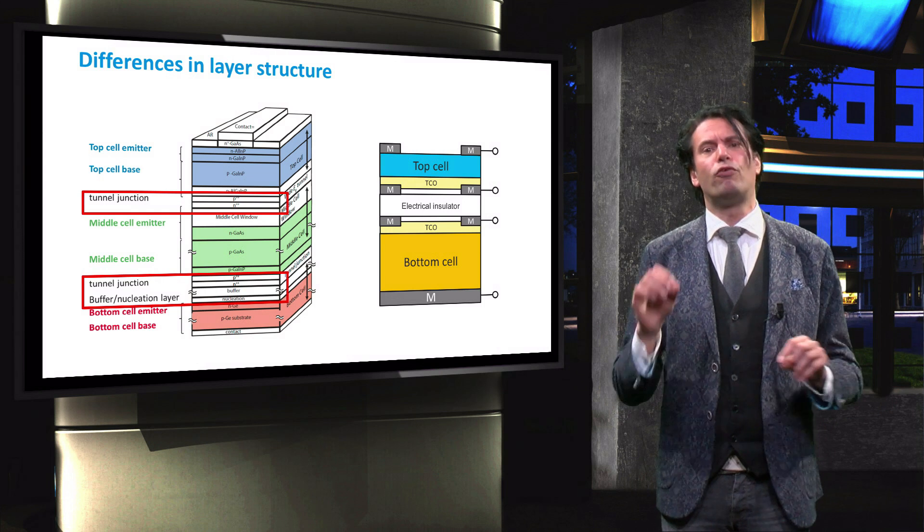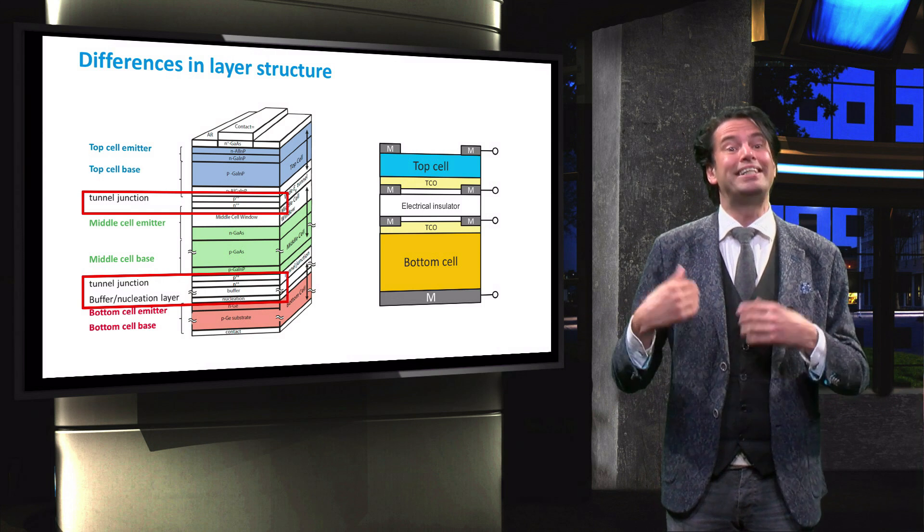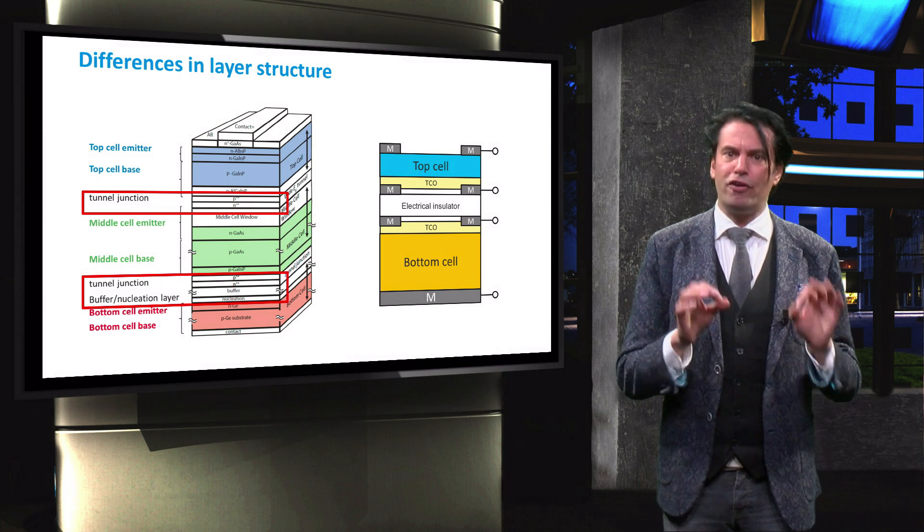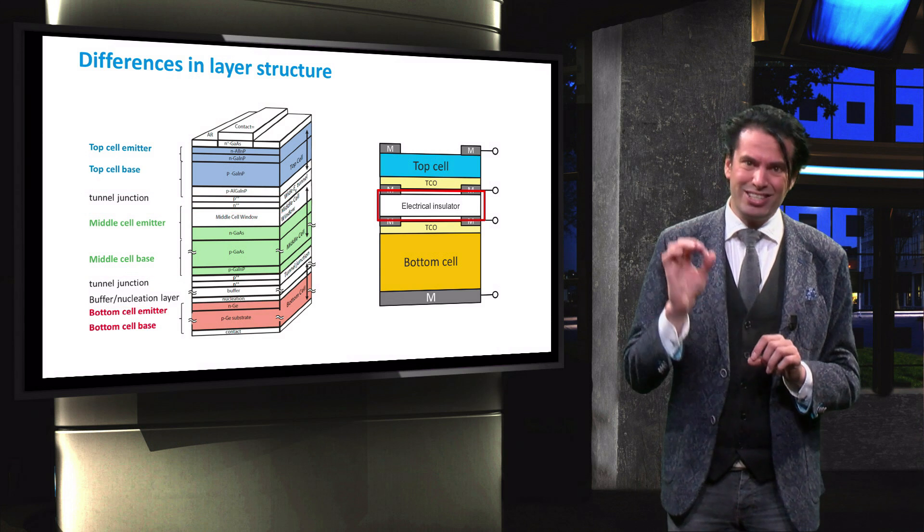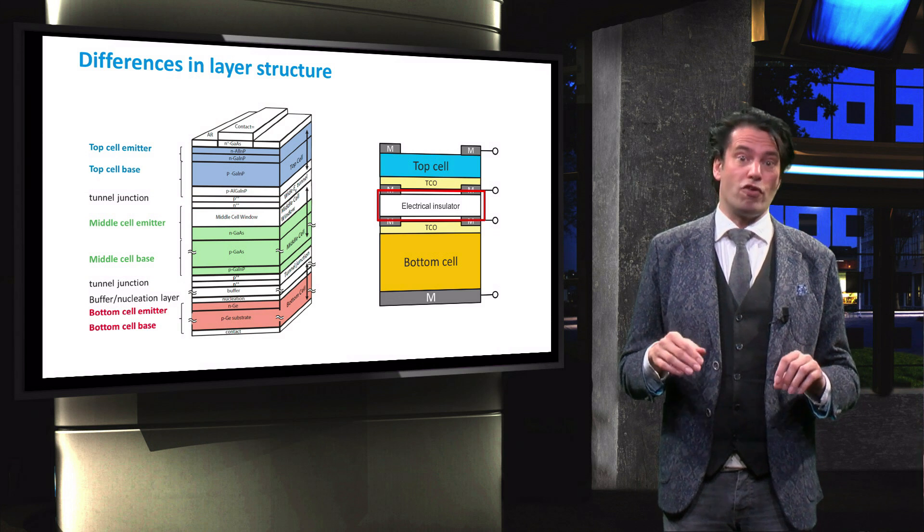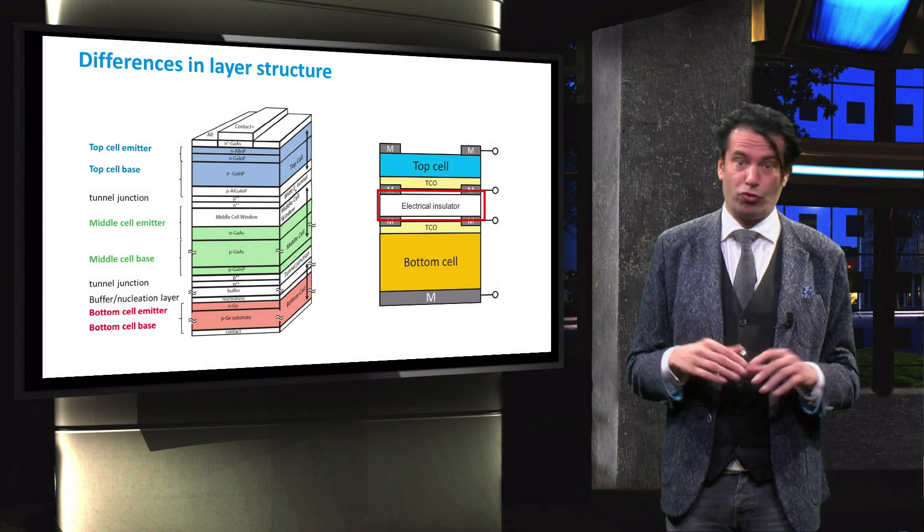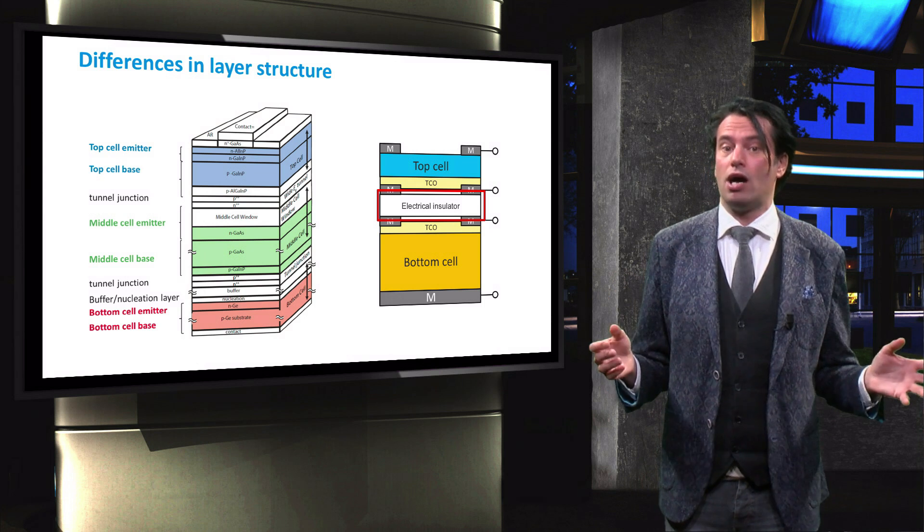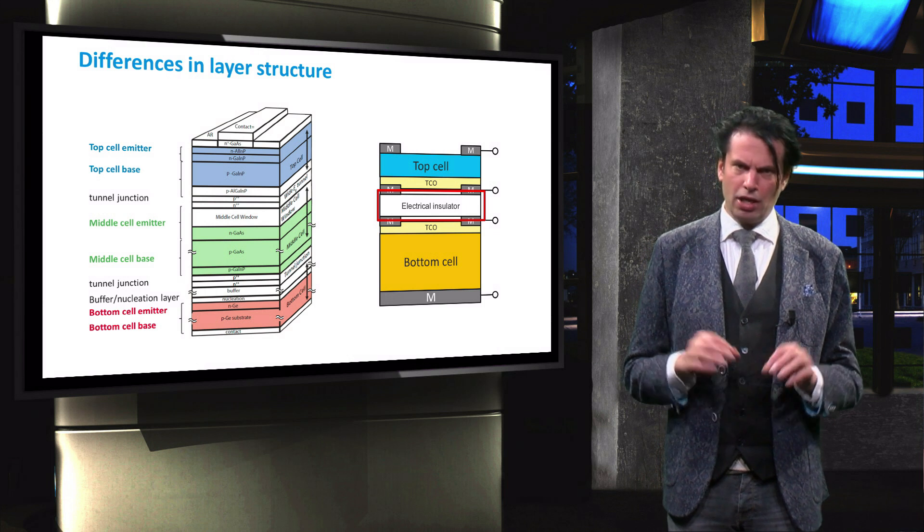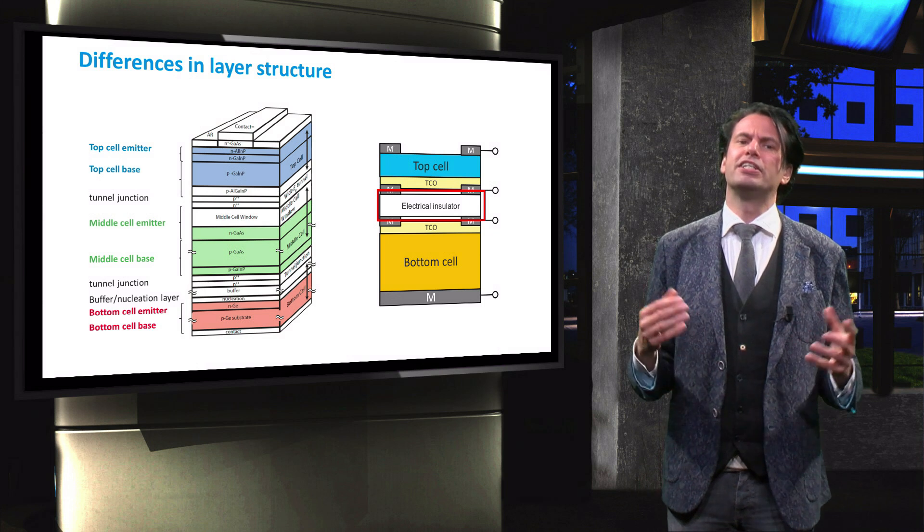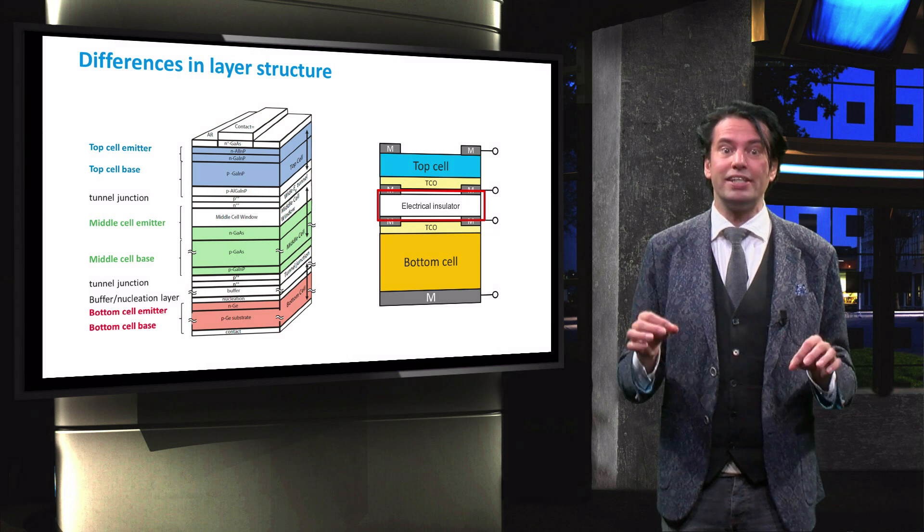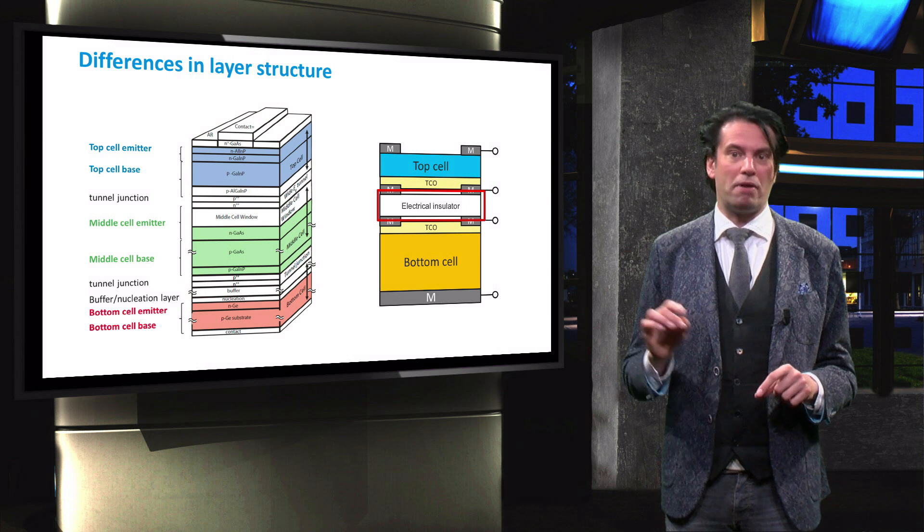On the other hand, the four terminal device requires some additional layers with respect to the monolithic multi-junction device. First of all, an electrical insulating layer should be added. These layers can consist of a combination of different materials. For example, a combination of glass and adhesives or an encapsulation layer can be used. The most important property of this layer is that it is electrically insulating and optically transparent to minimize parasitic absorption.